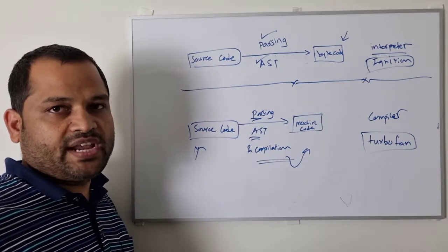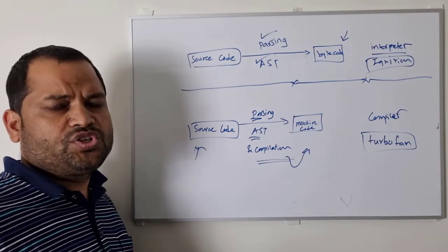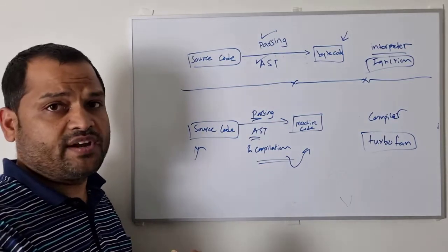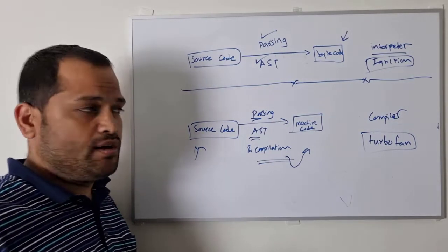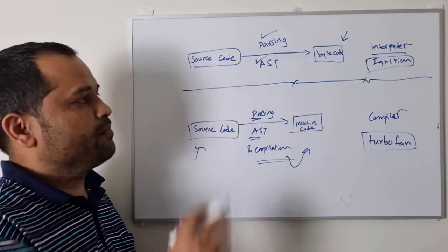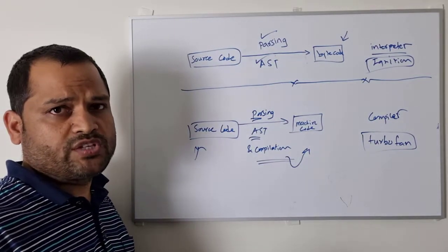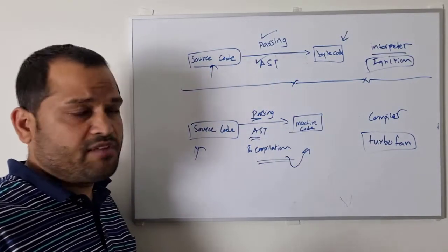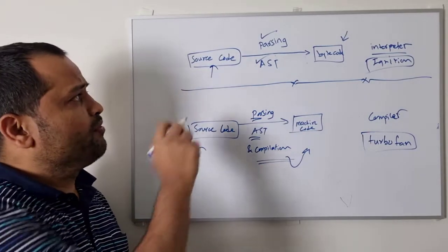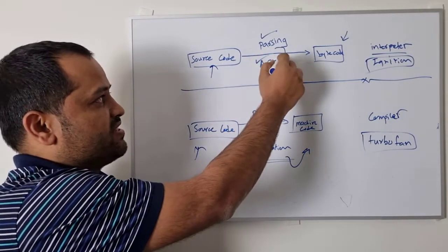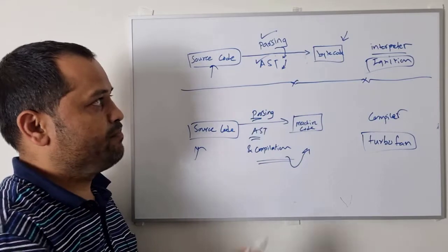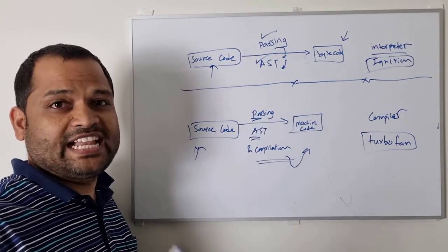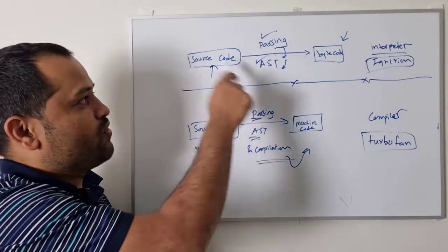The main benefit in the compilation process is that the execution speed is very fast. Every time we are running it, we are not looking at the source code — we are directly executing from the machine code that was pre-compiled. But in the case of the interpreter, every time we want to execute a JavaScript program, it will go to the source code every time. That is the main difference — every time the interpreter will go to the source code, create the parsing, then create the abstract syntax tree, and then create the byte code. All these steps have to be taken every single time.